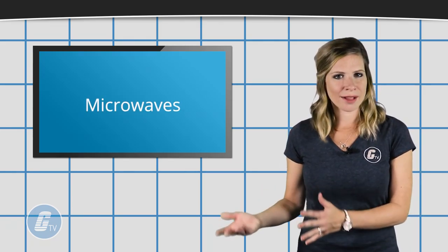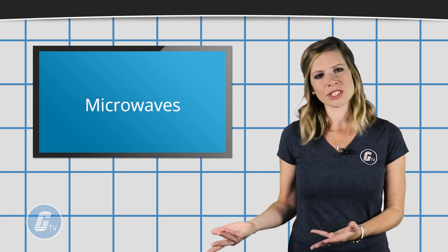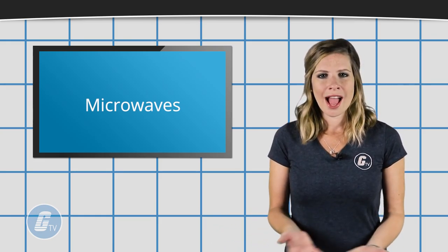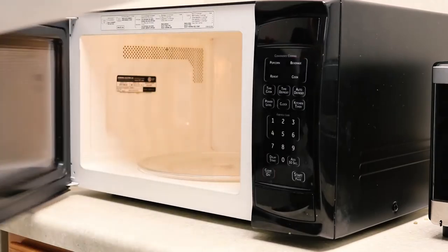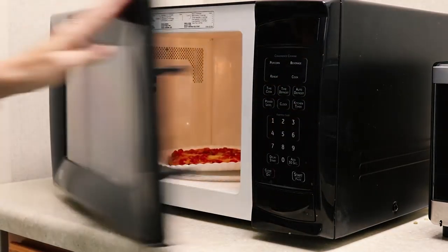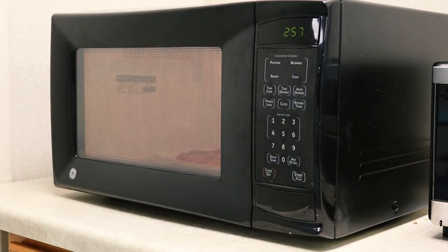The microwaves bounce back and forth off of the reflective metal walls within the food compartment, similar to light bouncing off of a mirror. However, instead of reflecting off of the food, the microwaves penetrate it instead, causing the molecules inside the food to vibrate more quickly than usual.